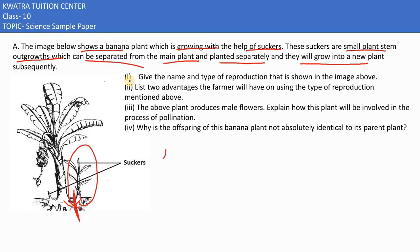The question asks: give the name and type of reproduction shown in the image. The type of reproduction is asexual, and the category is vegetative propagation.